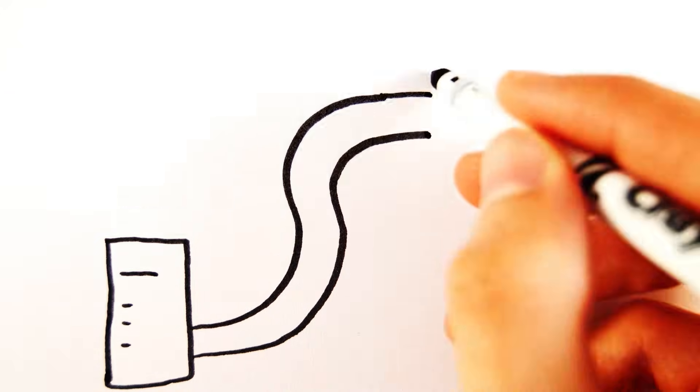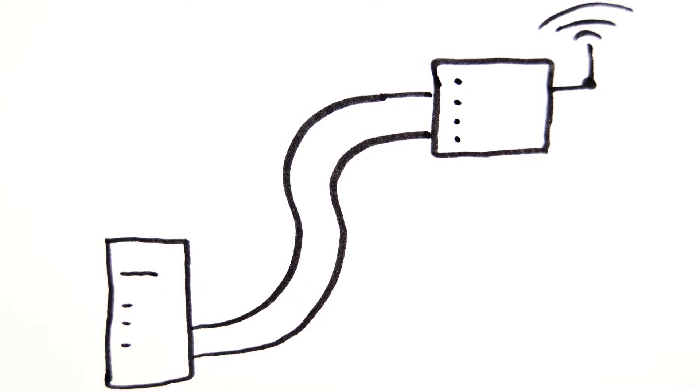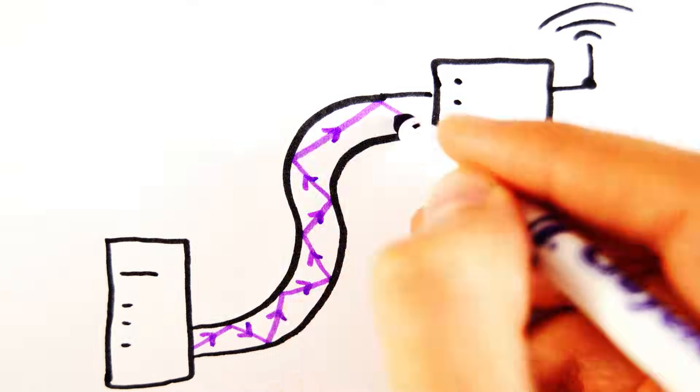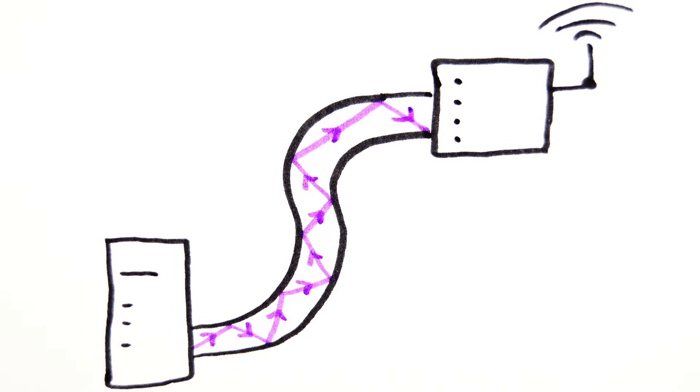Optical fibers can carry information using visible light and something called total internal reflection. It works by bouncing waves off the sides of a thin piece of plastic or glass until it emerges at the end.